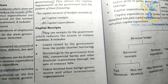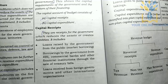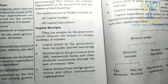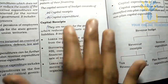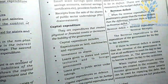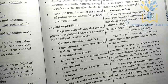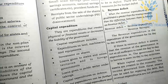Capital receipts include loans raised by the government from the public, borrowings by the government from the RBI, commercial banks, and other financial institutions through treasury bills, loans from foreign governments, and recoveries of loans made by the government.